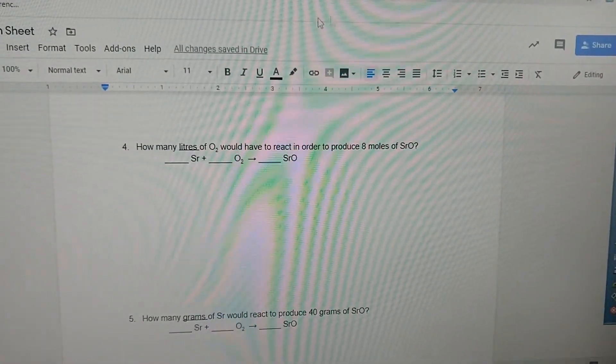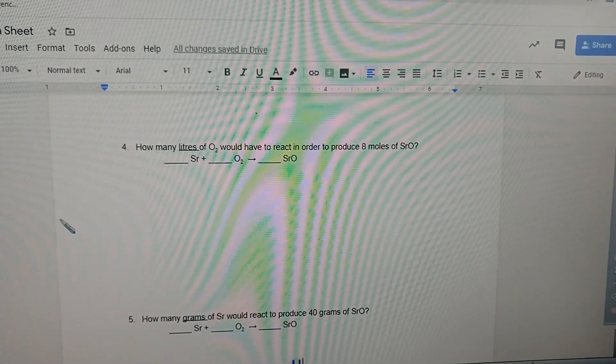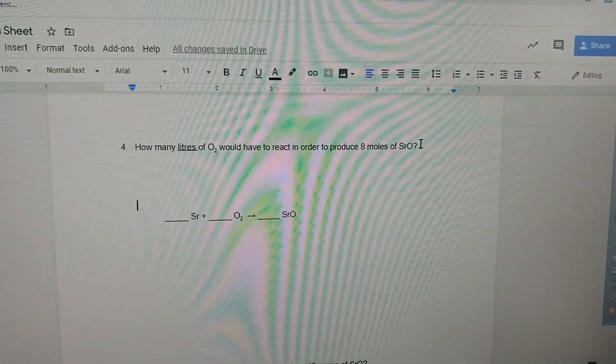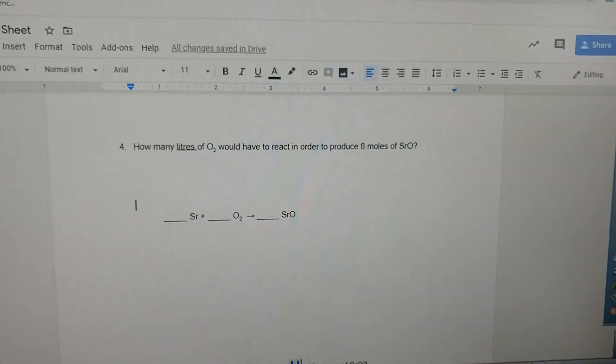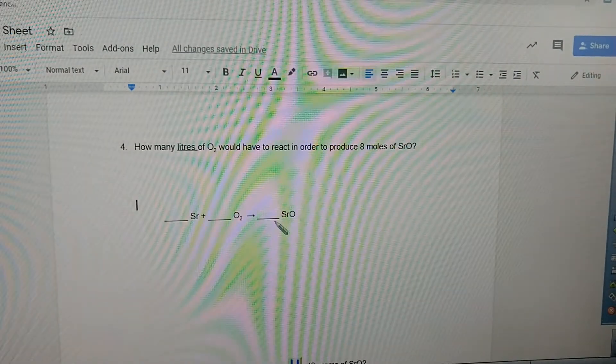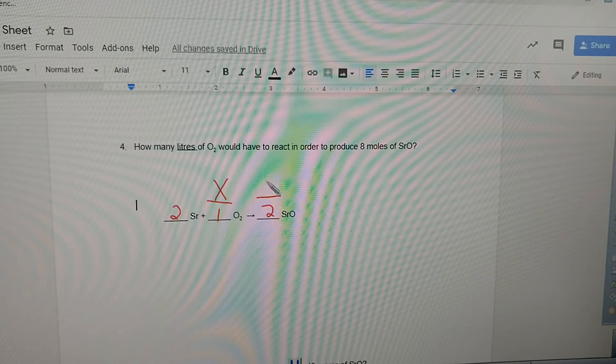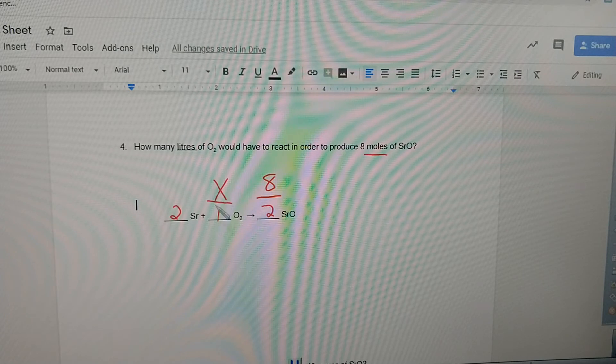How many liters of oxygen would have to react in order to produce eight moles of strontium oxide? Again, first thing we have to do is balance it. Sr plus O2, we're going to need a two, one, two. Now it's balanced. How many liters of oxygen? We're going to have to find out moles in order to produce eight moles of strontium oxide. Eight moles, so we can just put the eight there. Eight is to two as x is to one, and that x is going to be four. Four moles of oxygen.